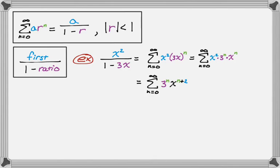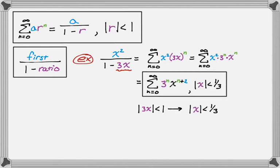Now what we need to do is consider that absolute value of r is less than 1. So this is our r. It's 3x, so we really need the absolute value of 3x to be less than 1. But that just means that the absolute value of x is less than 1 third. That's my answer. That's the series equivalent of this function.